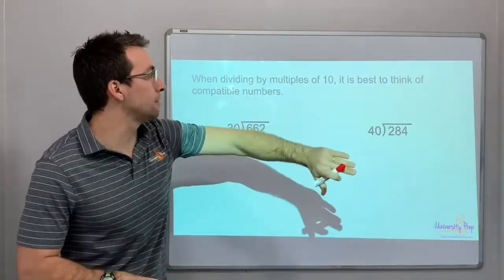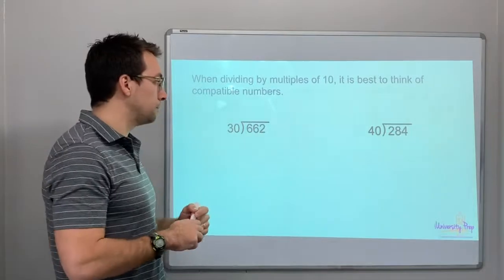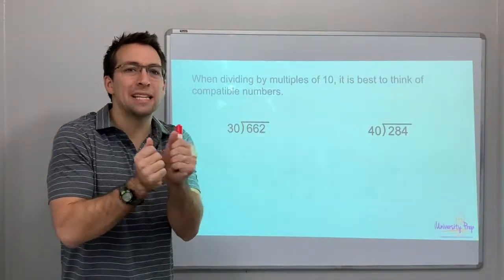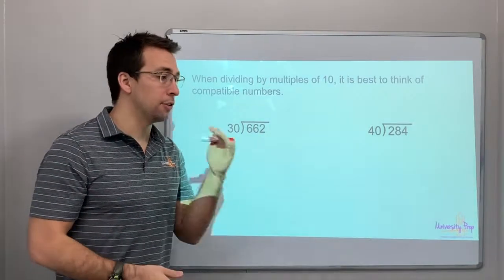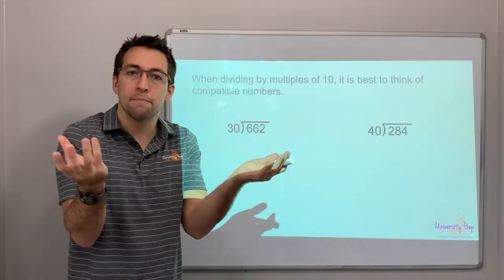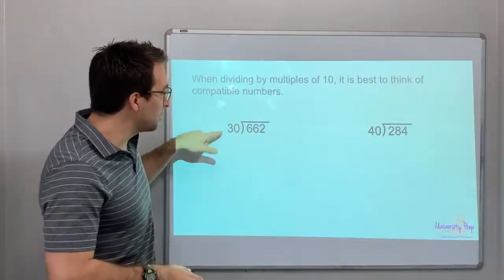When dividing by multiples of 10, it is best to think of compatible numbers. What are compatible numbers? Well, numbers that work together easily. So think about the times table. Okay, 3 times what equals 6? 3 times 2. Well, those are compatible numbers. Okay, so why do I say 3 and 2? Check this out.